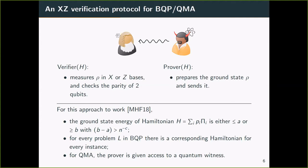For this approach to work, we are distinguishing the Hamiltonian whose ground state energy is below some threshold or at least inverse polynomial above the threshold. Also, the protocol can be used to verify every language in BQP because there is a reduction from every language in BQP to a local Hamiltonian problem. The protocol also works for QMA if the quantum efficient prover is given access to a quantum witness which may not be efficiently prepared.